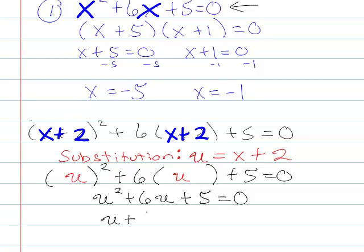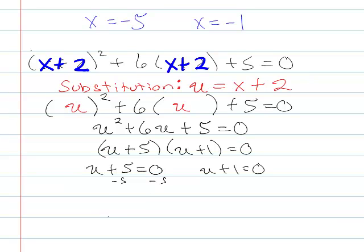I can write u plus 5 times u plus 1 equals 0. So that means u plus 5 is 0, or u plus 1 is 0. So that means if I subtract 5 from both sides, u is equal to negative 5, or u is equal to negative 1.